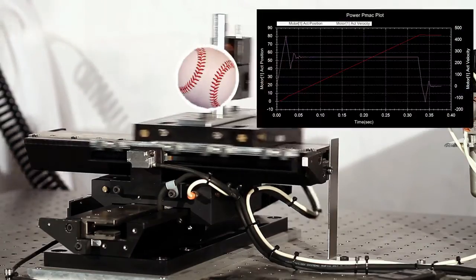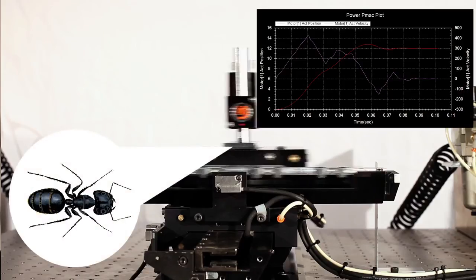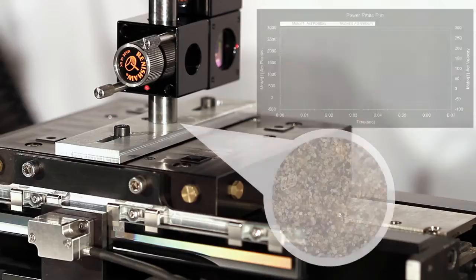To give you an idea of the extreme scale to which PMAC can servo when using the autocorrecting interpolator, we will have the stage move a distance equal to the size of commonly recognizable objects: first the size of a baseball, then the length of a carpenter ant, the diameter of a grain of sand,